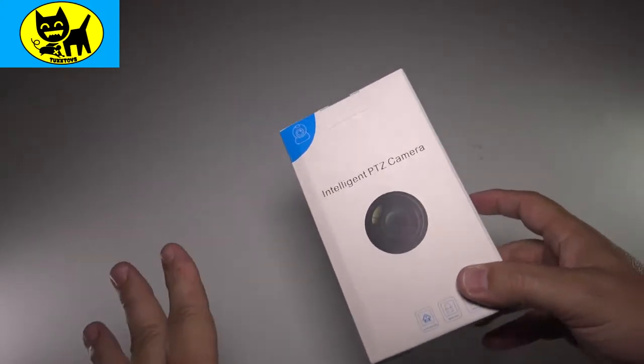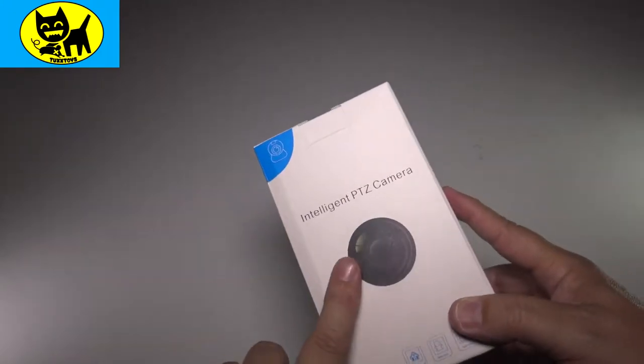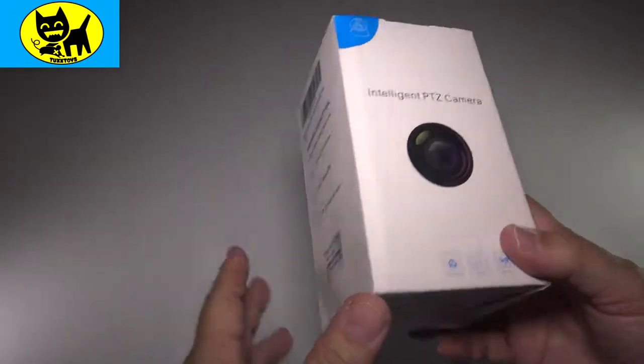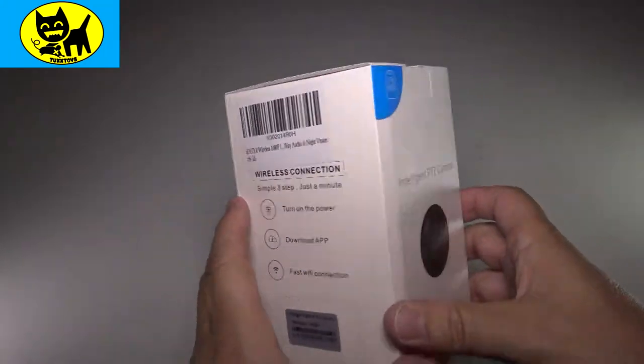So this is kind of like a re-review of the Intelligent PTZ camera. This is available on Amazon.com and you can check it out there. I'll have a link for you actually in the description down below so you can click it and get the link to see it yourself on Amazon.